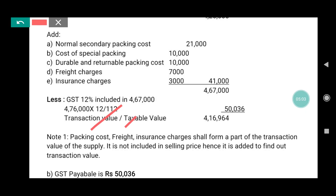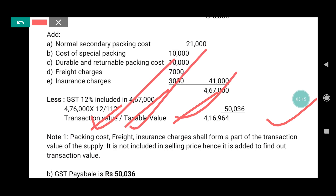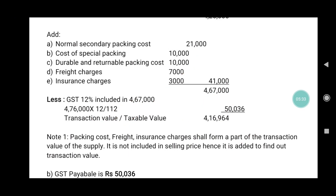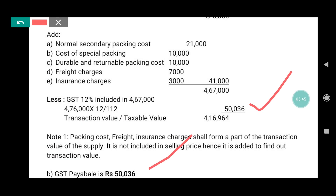Note: packing cost, freight, and insurance charge are part of the transaction value of supply. Since these were not included in the selling price, we are supposed to add them to find out the transaction value. That is why we added them. The amount of GST payable is ₹50,036.